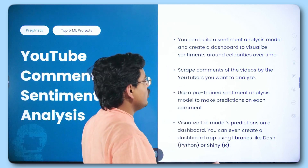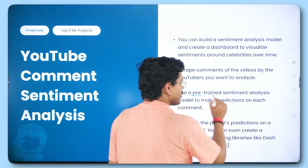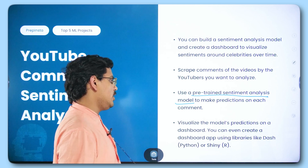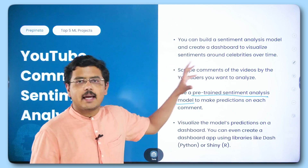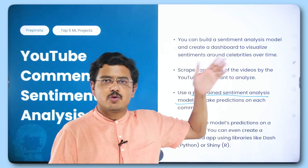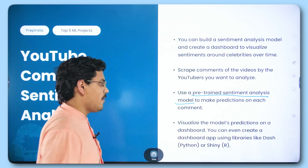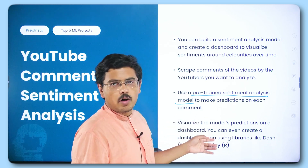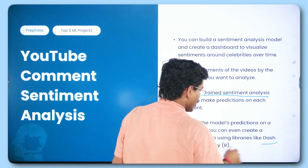You scrape the comments of videos by the YouTubers you want to analyze, then use a pre-trained sentiment analysis model to make predictions on each comment. You visualize the model's predictions on a dashboard and check over time how the popularity of one influencer has increased or decreased. You can even create a dashboard app using libraries like Dash in Python or Shiny in R.